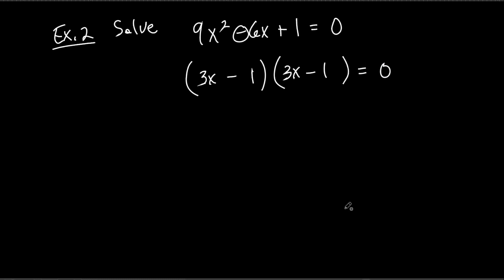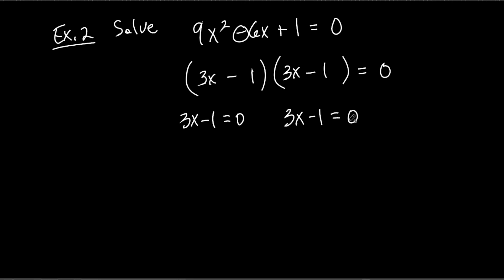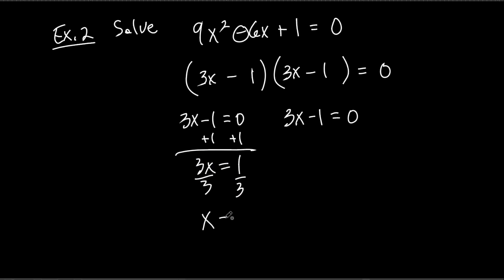This is all equal to zero. I've got two things multiplied together that equal zero, so I set them both equal to zero. But watch — I'm setting the same exact thing equal to zero twice, so I'm going to get one answer, not two different answers. Set 3x minus 1 equal to zero: add 1 to both sides, divide by 3, and x equals one third.